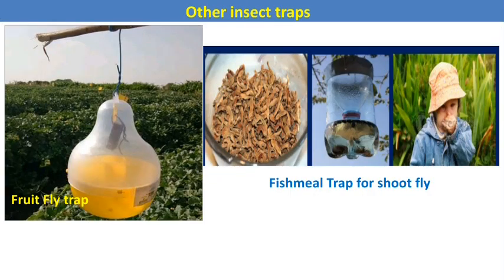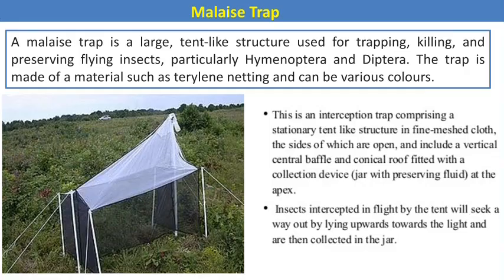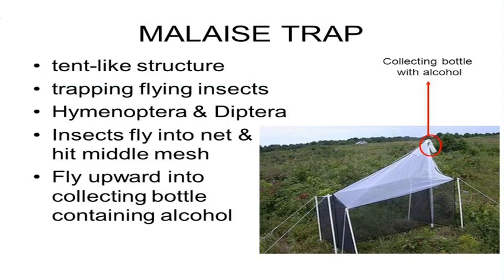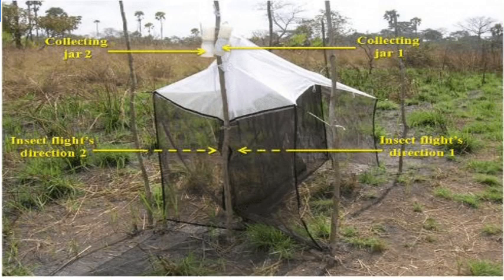Another trap is the fruit fly trap, mostly designed against fruit flies that attack cucurbits and mango crops. The fish mill trap is mostly designed to attract fruit flies in sorghum or cereal crops. The malaise trap is a large tent-like structure used for trapping, killing, and preserving flying insects — particularly Hymenoptera and Diptera. The trap is made from material such as terylene netting and can be in various colors. On the top section there is a collecting bottle with alcohol to collect the different insects.